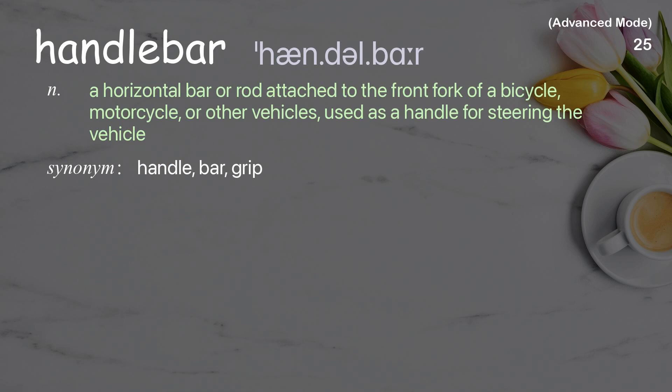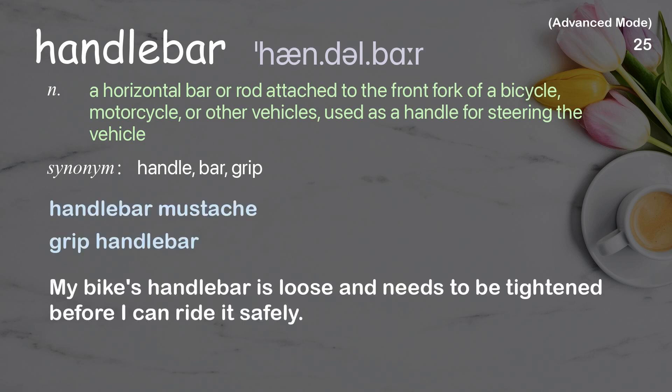Handlebar: a horizontal bar or rod attached to the front fork of a bicycle, motorcycle, or other vehicles, used as a handle for steering the vehicle. My bike's handlebar is loose and needs to be tightened before I can ride it safely.